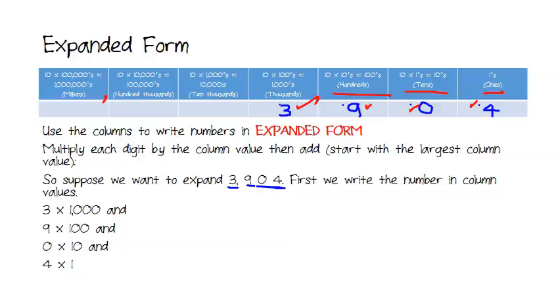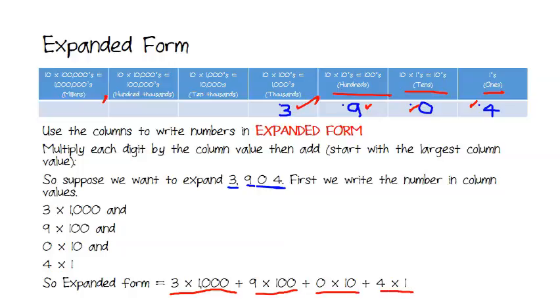And then we write them as a long sum. And so, expanded form for 3,904 is just going to be this whole thing: 3 times 1,000 plus 9 times 100 plus 0 times 10. And because 0 times 10 is actually 0, we don't really have to write that one out. Plus 4 times 1. And that's all there is to expanded form.